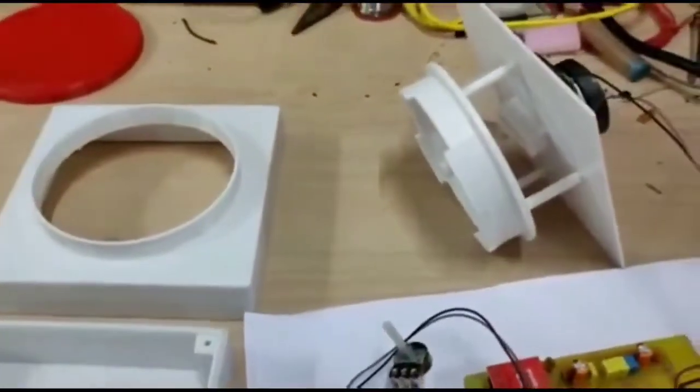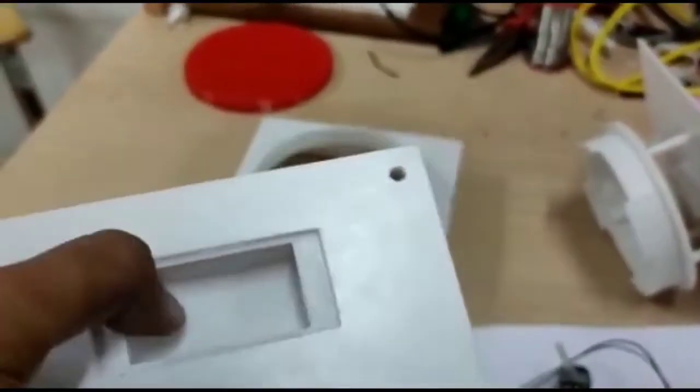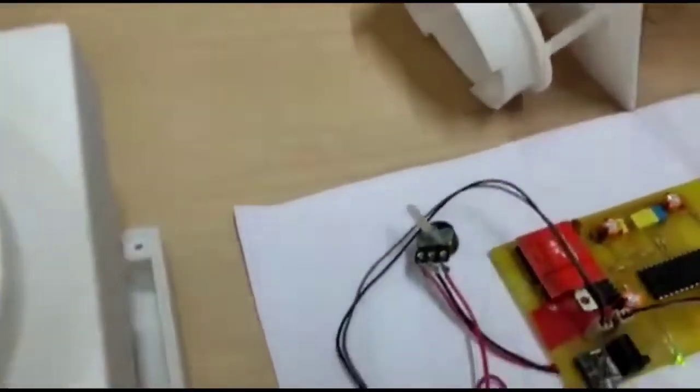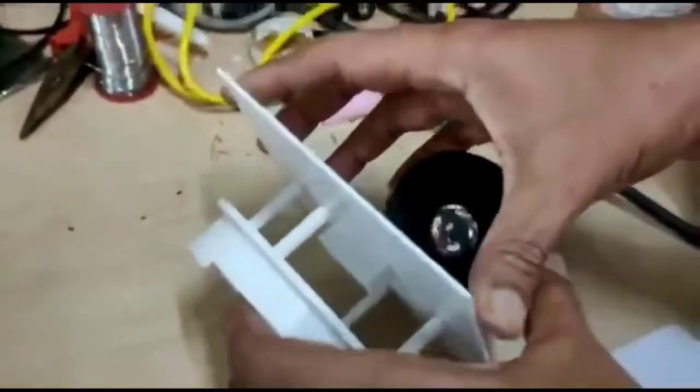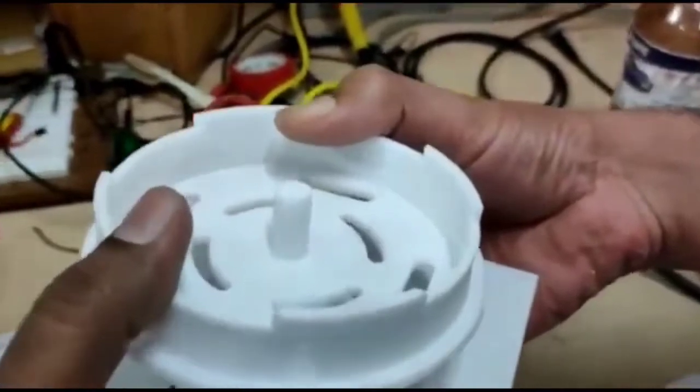So I will show you the parts that we have 3D printed. This is the base part with the battery holding compartment and this is the battery cover. So this part is the top, it will come in the top. Here you can find there is a speaker assembly part as well as the switch movement part.